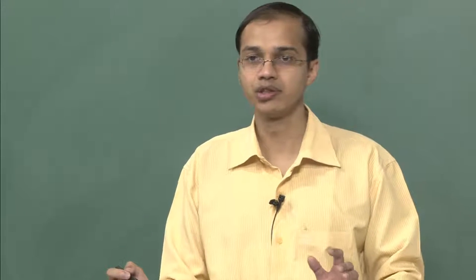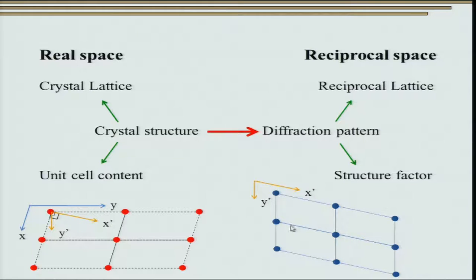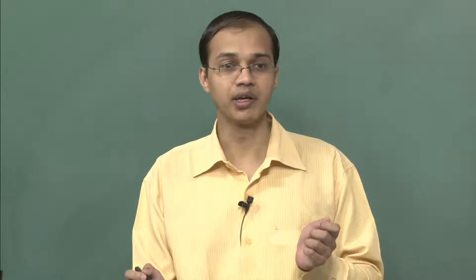What we expect to see in low energy electron diffraction is nothing but the actual reciprocal space corresponding to the 2D lattice under consideration. Any crystal structure comprises a crystal lattice and unit cell content, and the diffraction pattern has a reciprocal lattice and a structure factor. The beauty of low energy electron diffraction is that we are looking at 2D structures, so we can really look at a 2D structure in real space and visualize it in 2D reciprocal space.